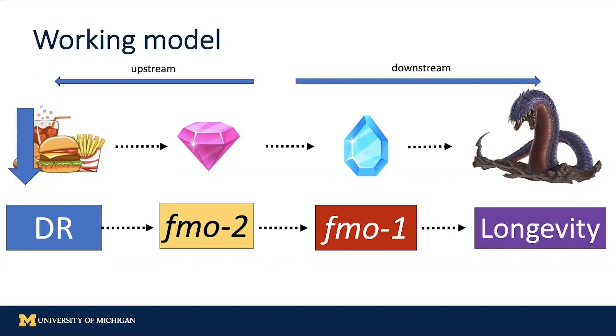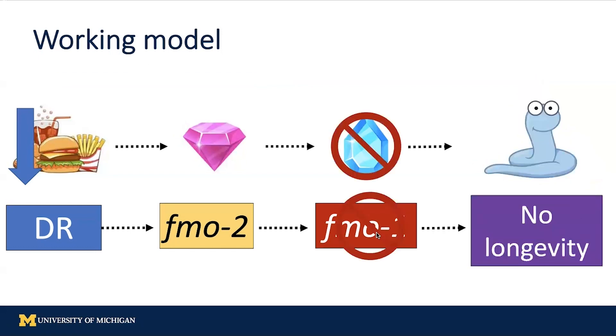What does this mean? The model basically shows the interaction of these factors. Let's look at a few examples of what would happen if we changed the factors. First, if we get rid of FMO1, the path is cut, and we cannot reach longevity.